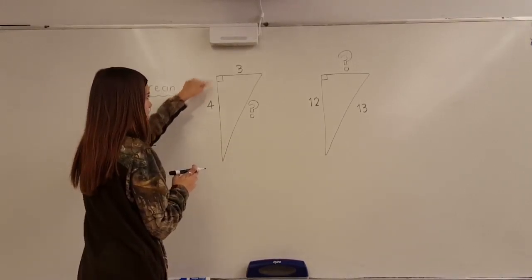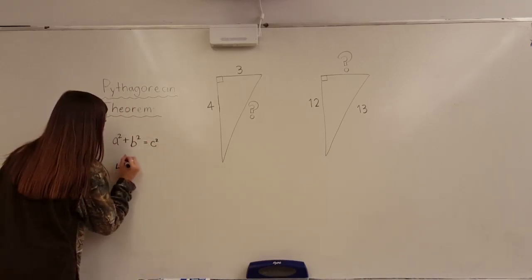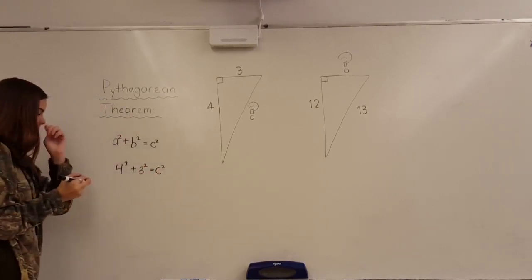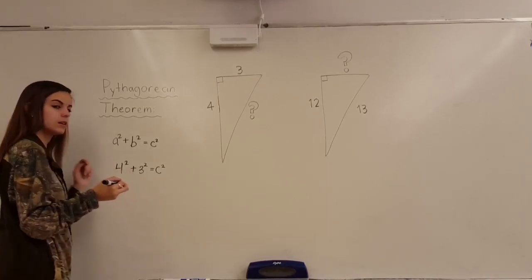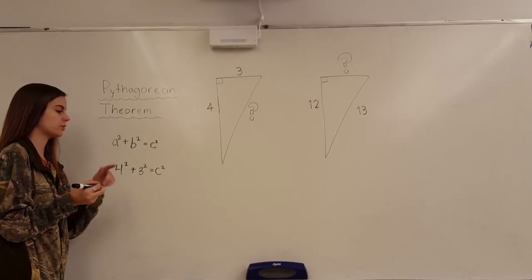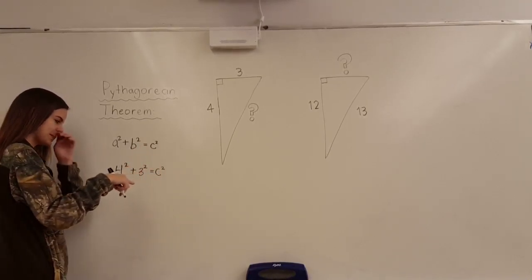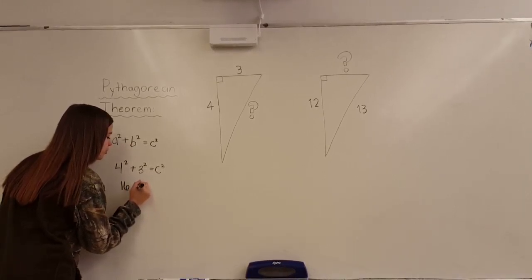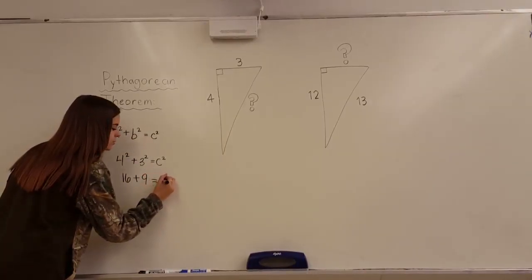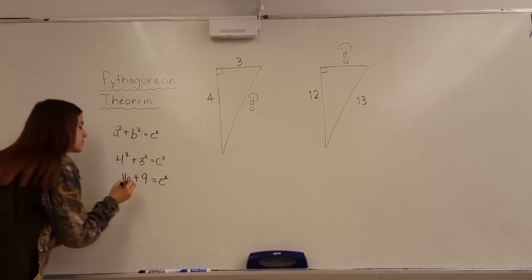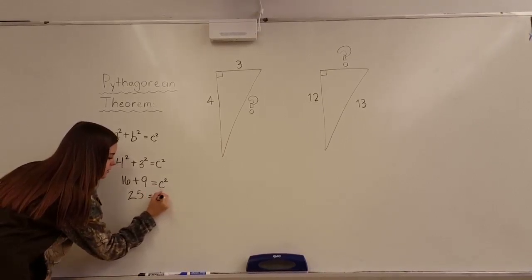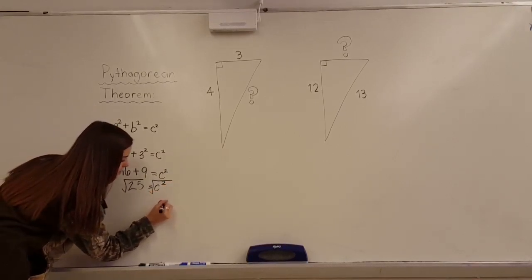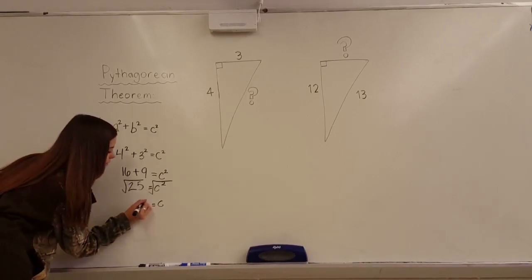So, for this first one, we have our a and our b. So we plug it in and we do 4 squared plus 3 squared equals c squared. Now, we just solve for this. And then that's how we'll get the square root, or that's how we'll get c squared. And then we'll take the square root of it and that will be c. So, 4 squared is 16 plus 3 squared is 9. And that's going to equal c squared. Now, 16 plus 9 is 25 equals c squared. And you take the square root of both of them. This cancels out and just becomes c. And 25, the square root of that is 5. So, now we know that c is 5.